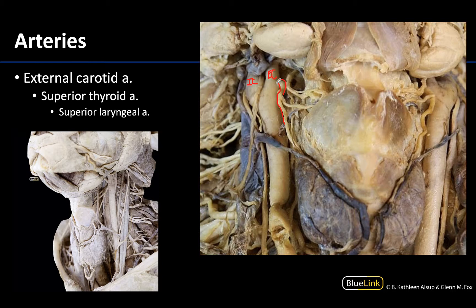The superior thyroid is an anterior branch and it descends to the thyroid gland as you can see here. It gives off the superior laryngeal artery, which I am outlining right there, which accompanies the internal branch of the superior laryngeal nerve through the thyrohyoid membrane and will supply the laryngeal area superior to the vocal folds. You can really see a nice clear view of it piercing through the thyrohyoid membrane.